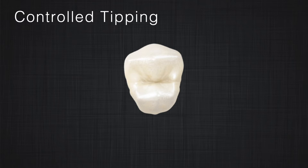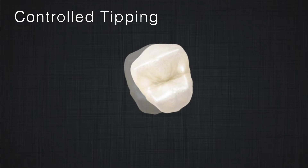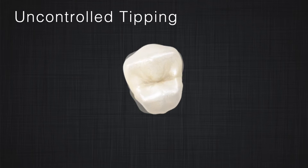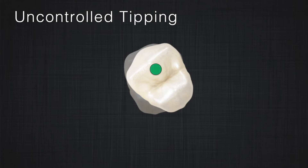How about controlled tipping in the occlusal view? In controlled tipping, either the buccal cusp or palatal cusp stays stationary and the rest of the tooth rotates around that cusp. In this example, the buccal cusp stays stationary and the root and whole occlusal table rotate around that point. In uncontrolled tipping, the tooth rotates around a point between the center of resistance and one of the cusps, so the buccal cusp goes one direction, the palatal cusp goes another direction, and the center of resistance also displaces. As I mentioned before, the center of resistance is always one point regardless of which dimension you look at it from.